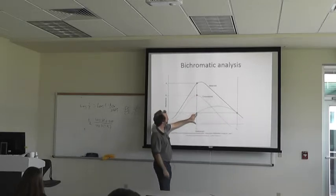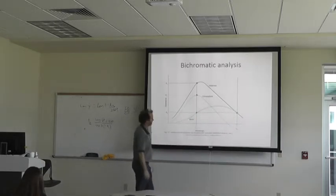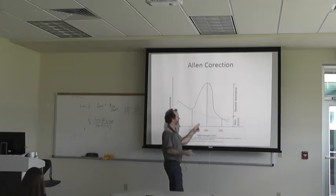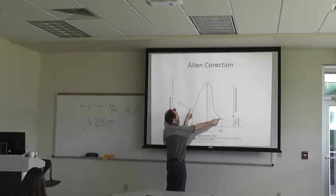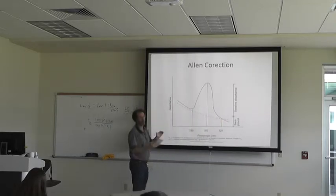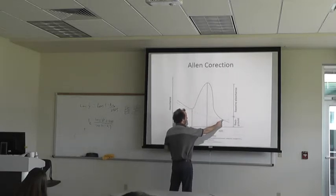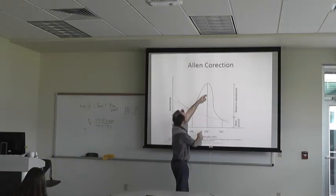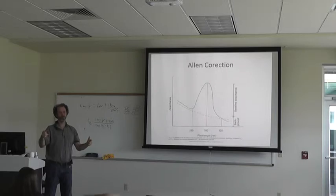A better approach is the Allen correction. You measure three points: two wavelengths surrounding the peak of interest and the peak itself. You take the average absorbance from the two flanking wavelengths and subtract it from the wavelength of interest to correct for background interferences in the sample. For example, take the absorbance at 280 nm and average it with the absorbance at 320 nm — say 2 and 1, average is 1.5 — then subtract 1.5 from the absorbance at 300 nm. Of course, we'd want to keep absorbance in the range of 0.1 to 1.0.